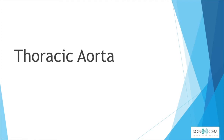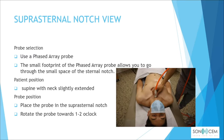For the thoracic aorta, two main views are needed to better evaluate it: the suprasternal notch view (SSN view) and the parasternal long axis view. For the suprasternal notch view, we use a phased array probe, also called a cardiac probe, whose small footprint allows it to fit through the small space of the sternal notch.